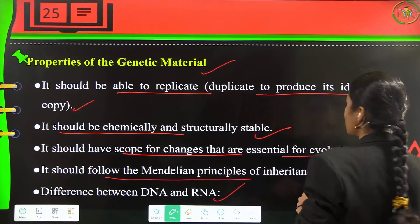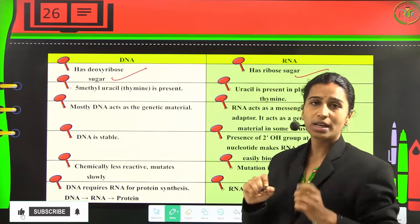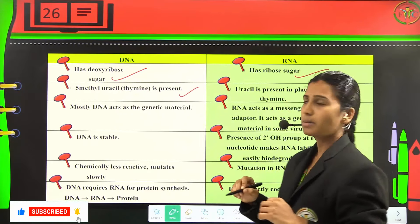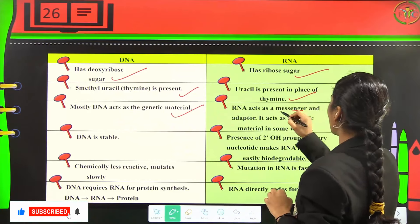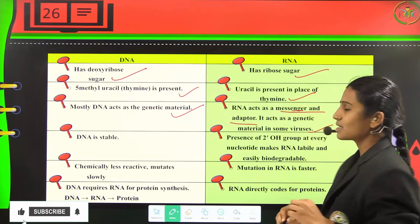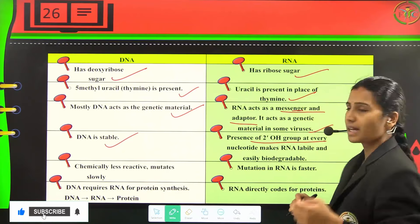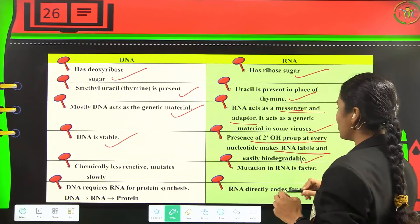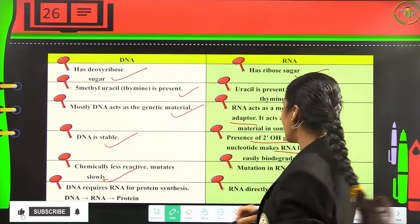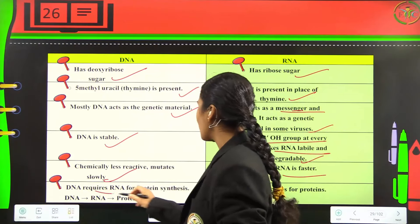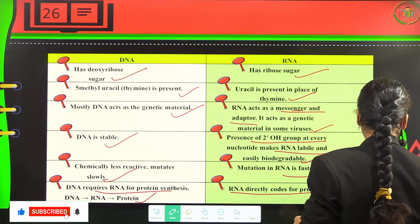Differences between DNA and RNA: DNA has deoxyribose sugar while RNA has ribose sugar. Thymine (5-methyluracil) is present in DNA whereas uracil replaces thymine in RNA. DNA mostly acts as genetic material; RNA acts as messenger and adapter. RNA can act as genetic material in some viruses. DNA is stable, whereas the 2'-OH group at every nucleotide makes RNA labile and easily biodegradable. DNA mutates slowly while RNA mutates faster. DNA requires RNA for protein synthesis, but RNA can directly code for proteins.